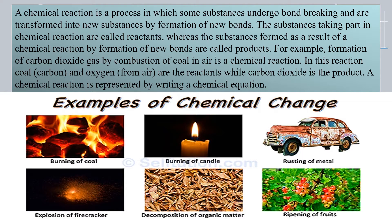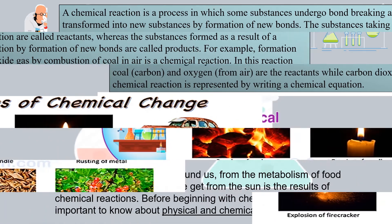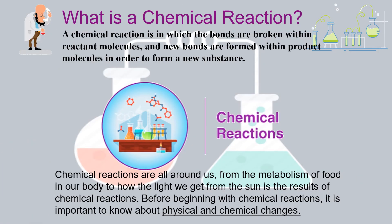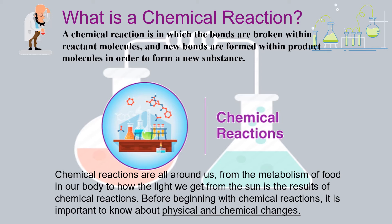A chemical reaction is represented by writing a chemical equation. A chemical reaction described as a statement would take a lot of time, so there are methods of writing down the chemical reaction in the form of chemical equations. In simple terms, a chemical reaction is one in which bonds are broken within the reactant molecules and new bonds are formed within the product molecules in order to form a new substance.